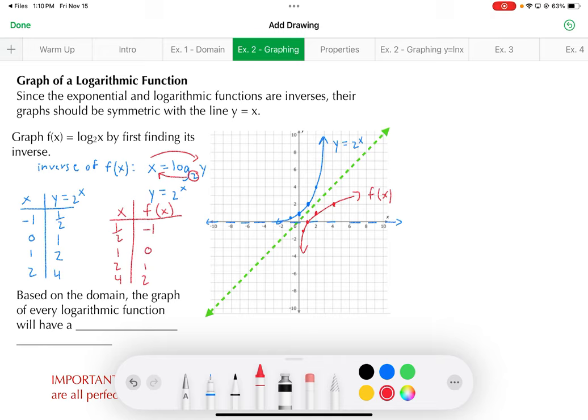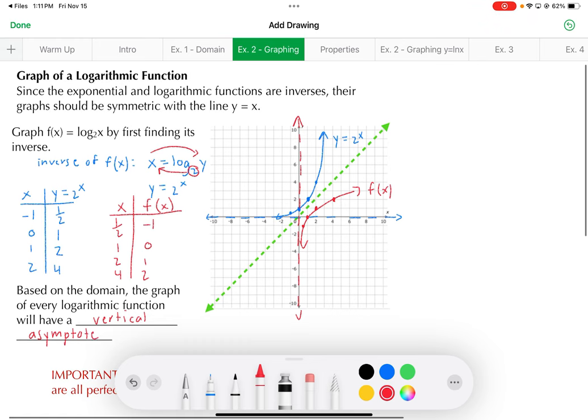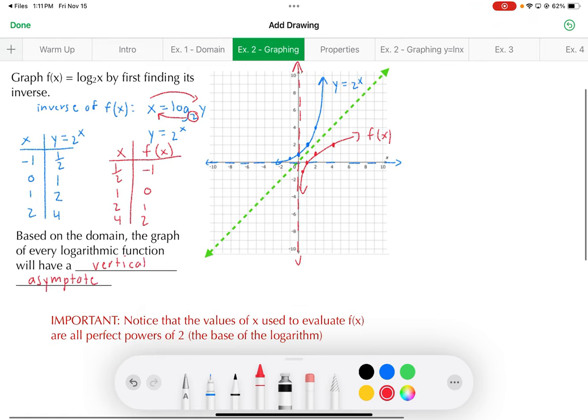Plot those points. Okay, so here we can see we've got a vertical asymptote now. That's consistent with the domain. We said the domain for a logarithmic had to be x greater than 0. So, based on the domain, the graph of every logarithmic function will have a vertical asymptote.